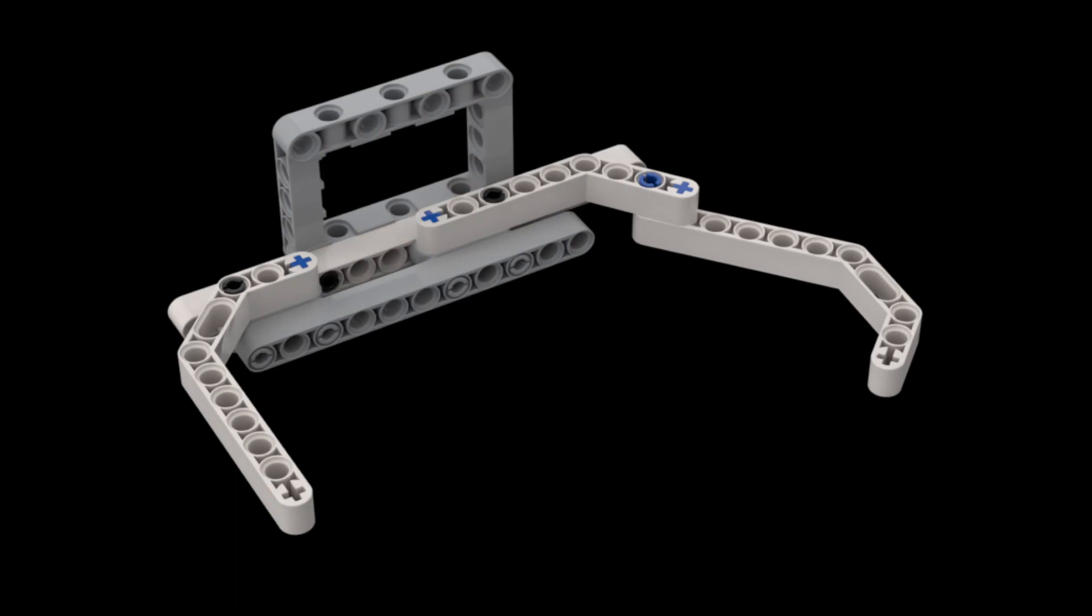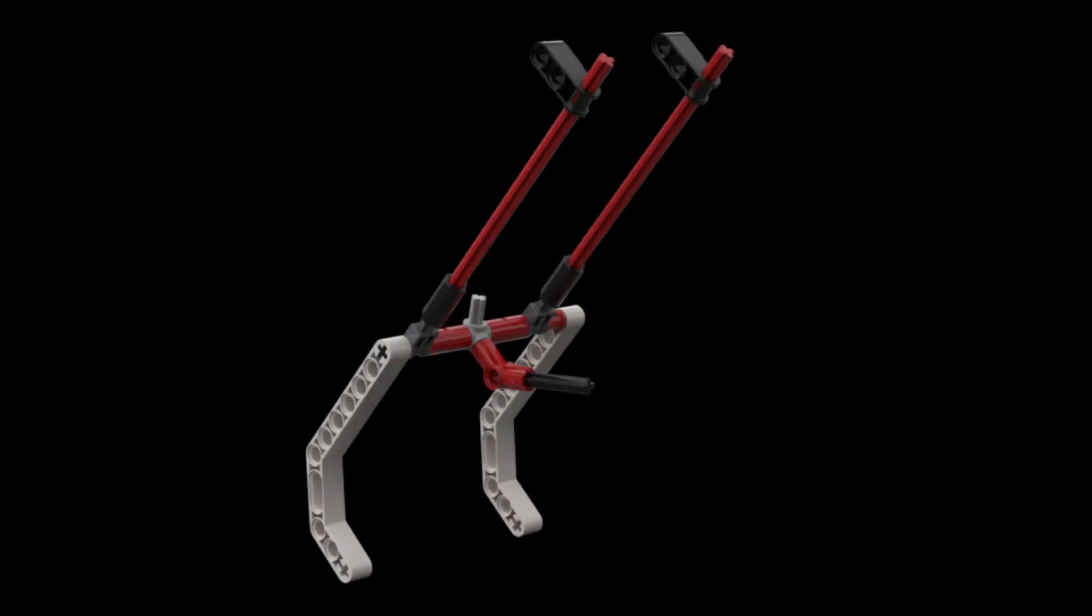Our EV3 also uses two different attachments to solve this mission. The first one is a modified bumper with additional angled beams to collect the water units, and the second one is a slightly modified base bar attachment with two long and one short axle arms sticking out of the front. The long axle arms are a little bit wider apart from each other than the two red hooks on the mission model.